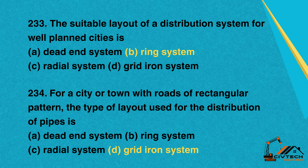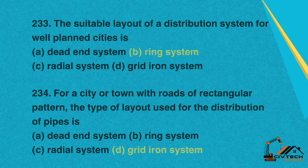Question 234: For a city or town with roads of rectangular pattern, the type of layout used for the distribution of pipes is. A. Dead end system. B. Ring system. C. Radial system. D. Grid iron system. Correct option: D. Grid iron system.